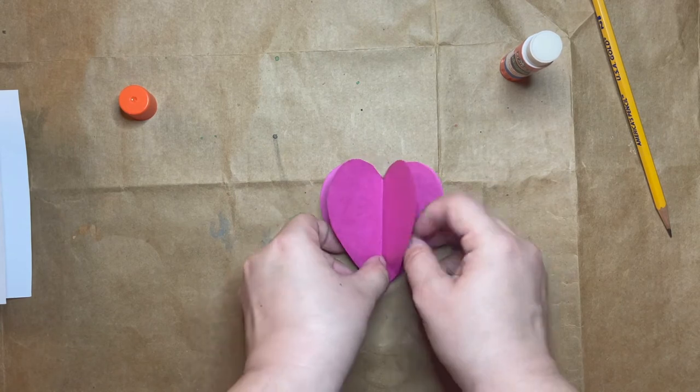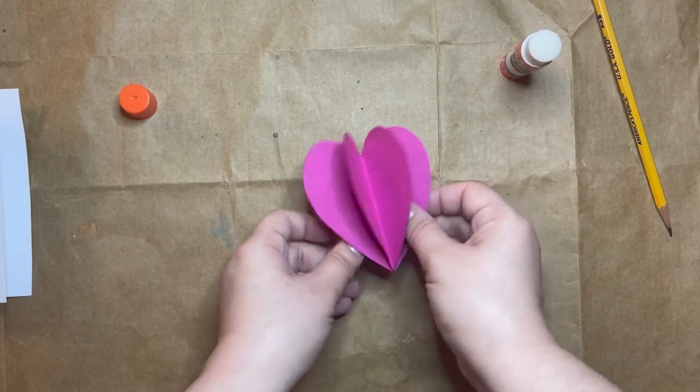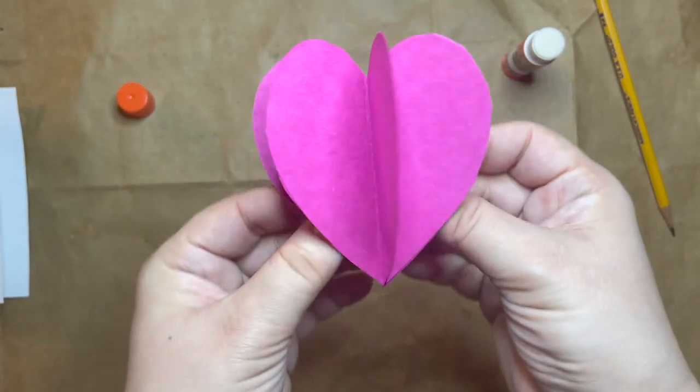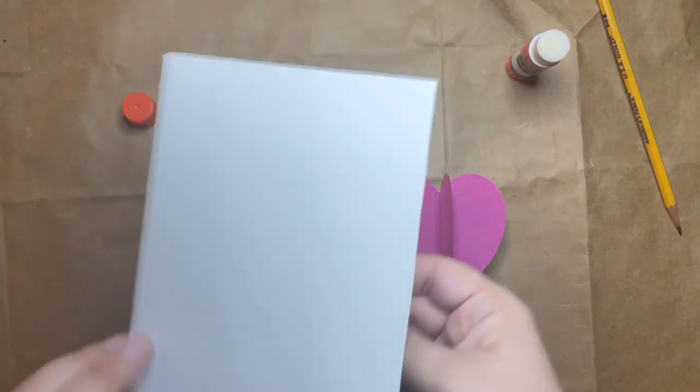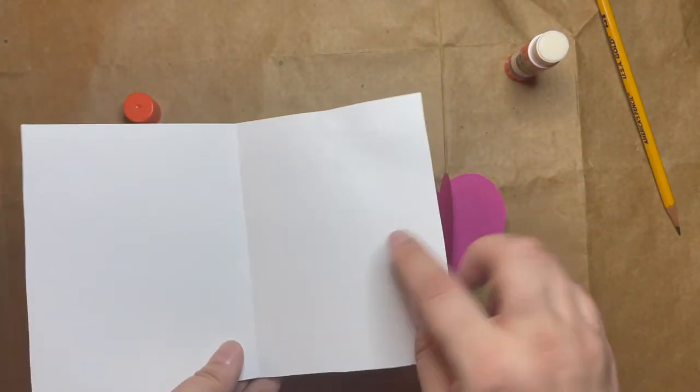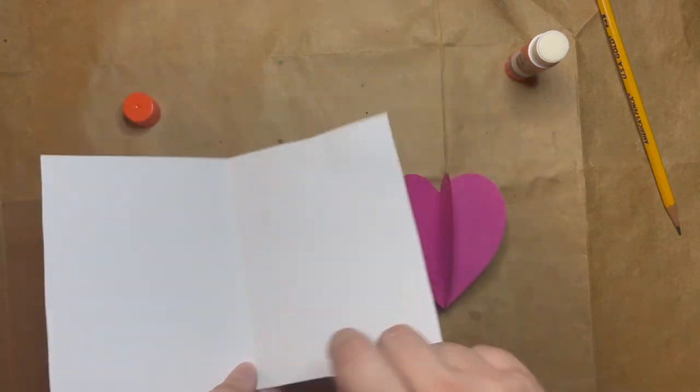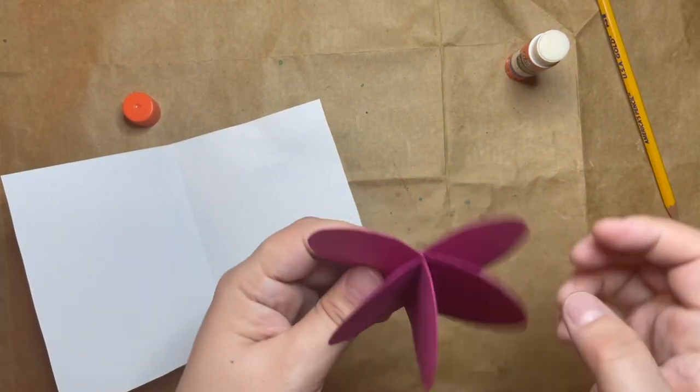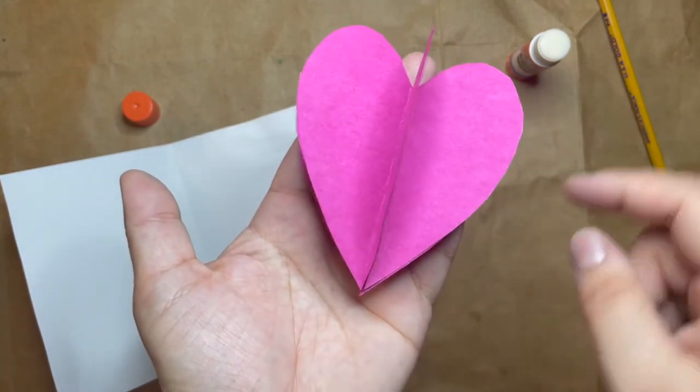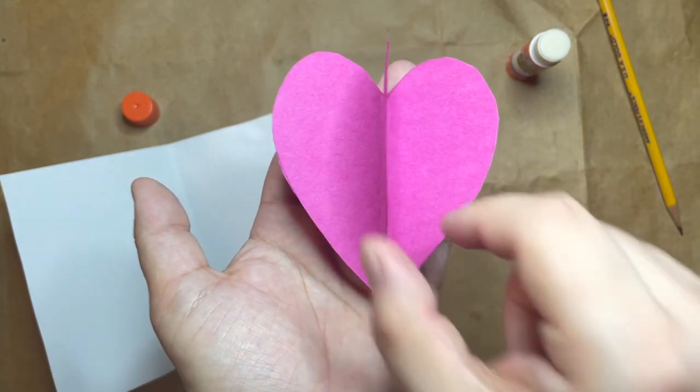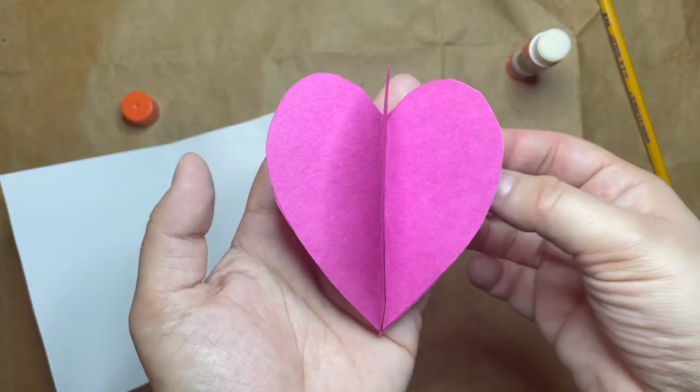But you can see now, I have kind of a cool 3D heart shape here. I like how that looks. Now I'm going to grab my card and open it. You can see there's a fold line here. I am going to take this back side—you can see how it's sitting up like this. These are all the pieces of paper I've glued together already.